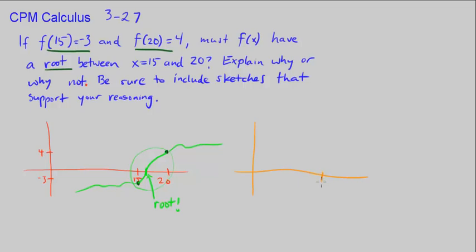So if this is 15 again, this is 20, this is -3, this is 4. In this example, we see at 15 our value is -3. f(15) = -3. At 20, it's 4. Well,